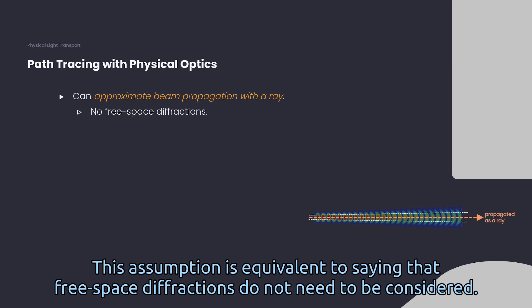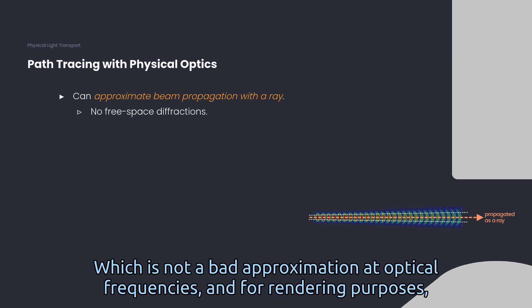Then we may simply approximate beam propagation with a ray, because the beam's cross-section is small compared to scene features. This assumption is equivalent to saying that free space diffractions do not need to be considered, which is not a bad approximation at optical frequencies and for rendering purposes.